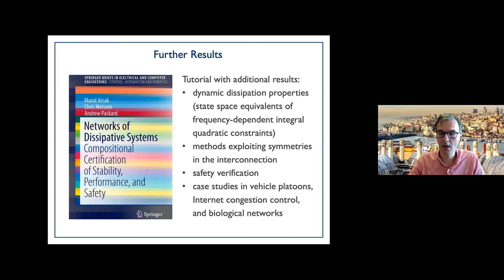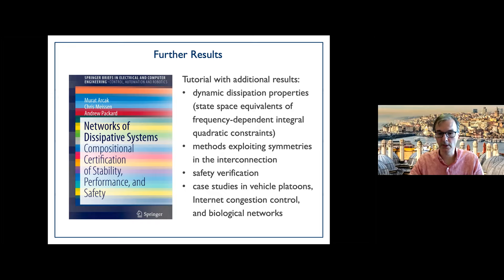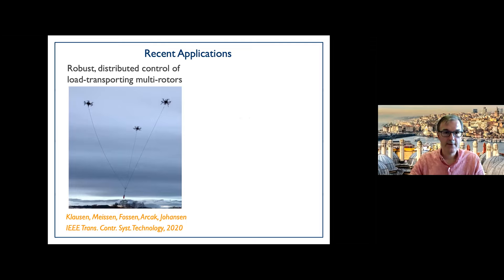Some of these results were summarized in a tutorial we published a few years ago. In that book we use both dissipation properties and dynamic dissipation properties — state-space versions of frequency-dependent integral quadratic constraints. We also exploited symmetries in the interconnection for computational advantages, went beyond stability and performance to address safety verification using barrier certificates, and gave examples from vehicle platoons, internet congestion control, and biological networks.